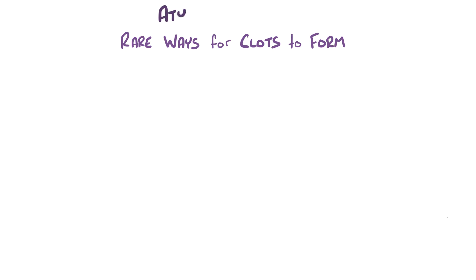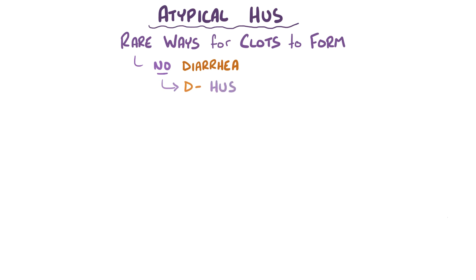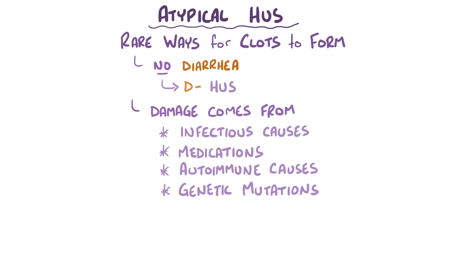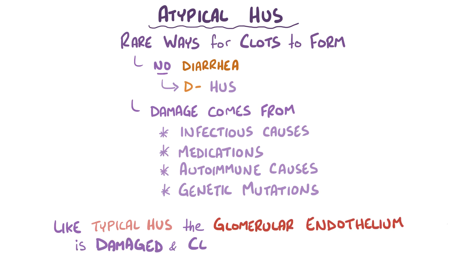There are other more rare ways for abnormal clots to start forming, and these are lumped together and called atypical hemolytic uremic syndrome. In atypical hemolytic uremic syndrome, there's no preceding diarrhea, so it's also known as D-negative hemolytic uremic syndrome. In this type, there's often damage to the endothelial cells lining the glomerular capillaries, and that damage can come from infectious causes not associated with diarrhea, as well as certain medications or autoimmune causes. There are also familial forms where genetic mutations relate to a predisposition for damage to these endothelial cells. Regardless of the cause, the end result follows a pattern similar to typical HUS, where the glomerular endothelium gets damaged and blood clots start to form in the kidneys.